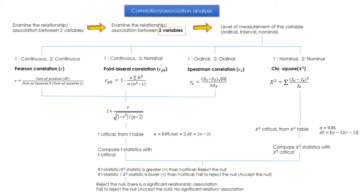Once we calculate our R, the correlation coefficient, we have to transform it into a T-score in order to make comparison and interpretation — we are testing the hypothesis of whether there is a relationship or not. So we convert R to T using the formula: R divided by the square root of (1 minus R-squared) divided by (N minus 2). This gives you the T-statistic.